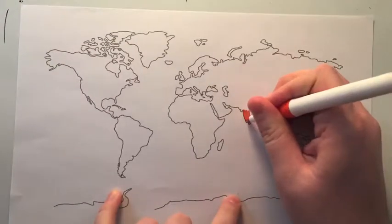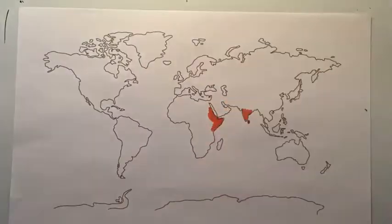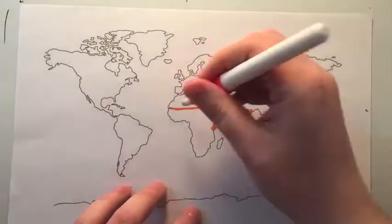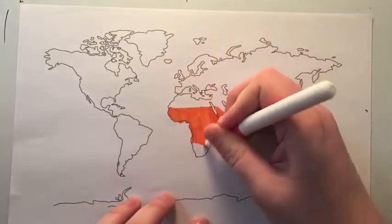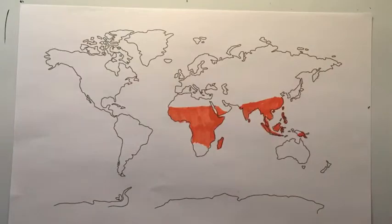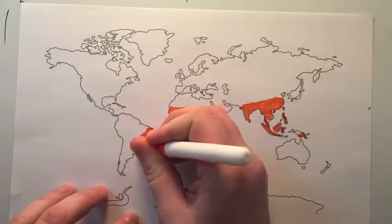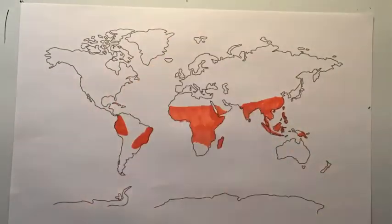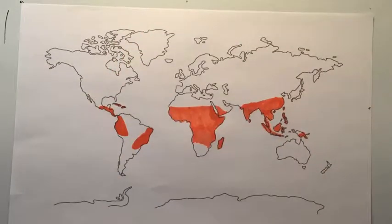Coffee leaf rust is unfortunately found wherever coffee is grown in the world. It was first discovered in Sri Lanka in the mid-1800s, but quickly spread to Africa and Southeast Asia. It was not until 1970 that the disease first appeared in the Western Hemisphere in Brazil, but quickly spread to the rest of South America and the Caribbean.